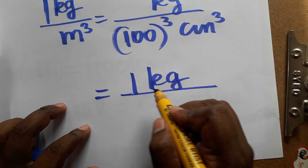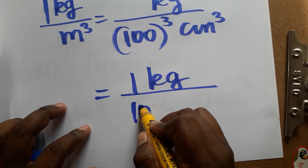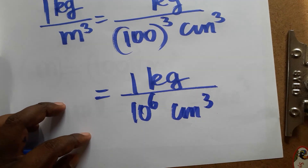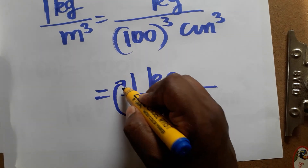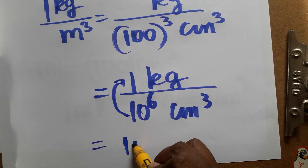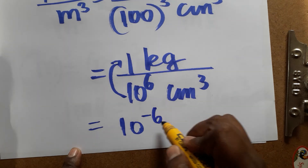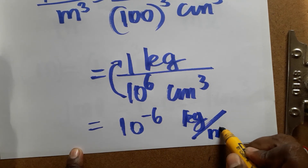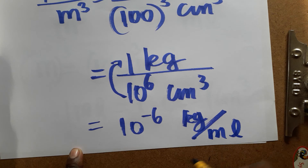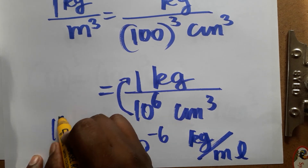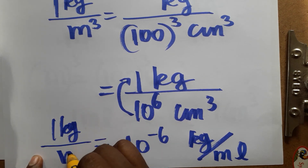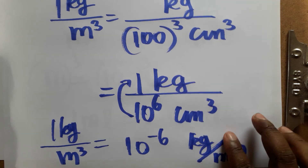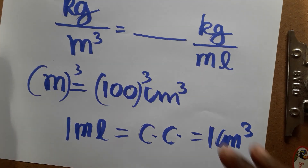So we have 1 kg divided by 100 cubed, which means 10 to the power of 6 centimeter cube. Moving 100 to the power of 6 from the denominator to the numerator gives us 10 to the power of minus 6 kg per centimeter cube. Since centimeter cube can be taken as ml, this becomes 10 to the power of minus 6 kg per ml.